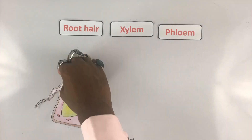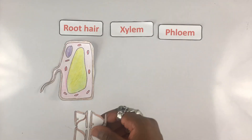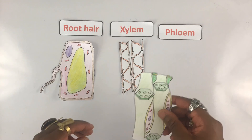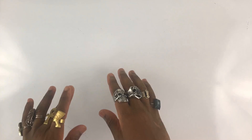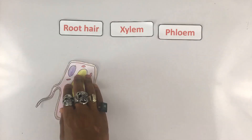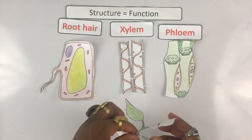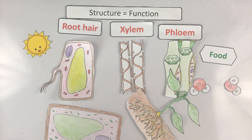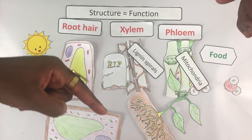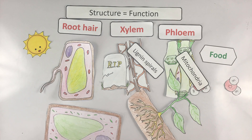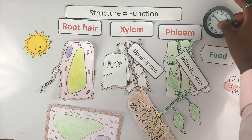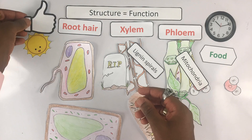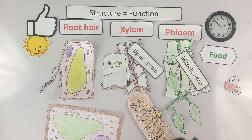To summarize, we looked at root hair cells, xylem cells, and phloem cells. If you're still unsure, rewatch the video. If you're ready to move on, check the description for some corresponding worksheets and also for the answers to the previous worksheet. If you liked what you saw, then like what you saw — peace.